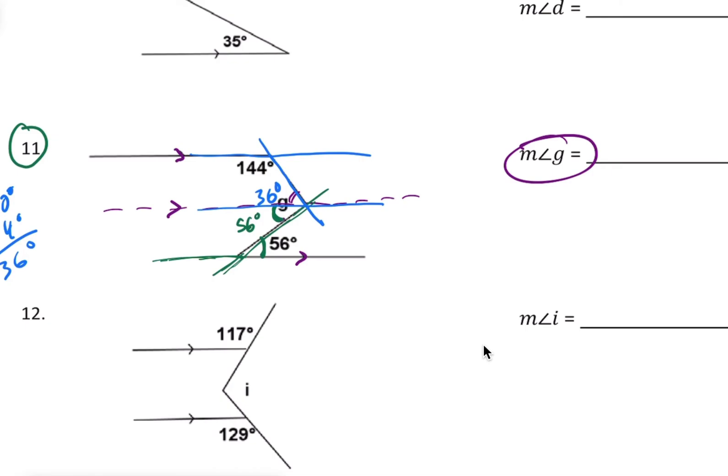Now these two angles both add up to give me G so to find out the measure of angle G I would have to go 36 degrees and add it to 56 and that's going to give me my final answer which is let's see 6 and 6 that's 12 so we have 92 degrees. So that's the measure of that angle.